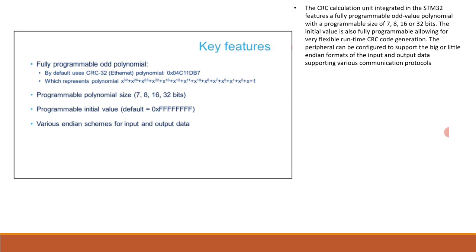The programmable polynomial size options are 7, 8, 16, and 32 bits. The programmable initial value defaults to 0xFFFFFFFF. Various endian schemes for input data are supported, enabling compatibility with various communication protocols.